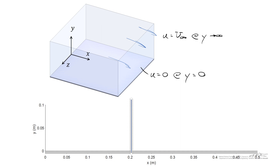Let's consider a location along the length of the plate at about 0.2 meters. We're trying to figure out what u is as a function of y. If we drew the velocity profile, we know that far away from the plate u is equal to u infinity and the flow is uniform, while at the surface of the plate the velocity is equal to zero. The goal here is to connect the dots between y approaching infinity and y equals zero.